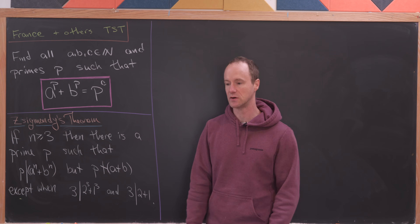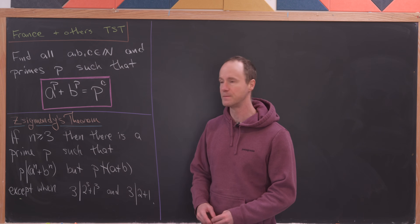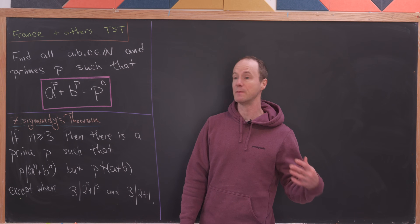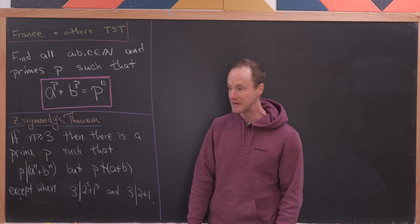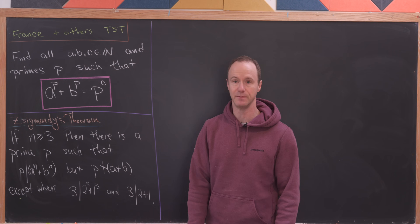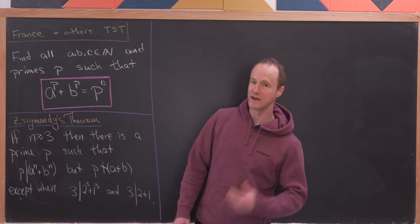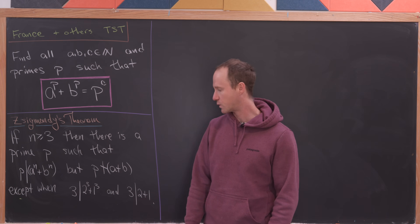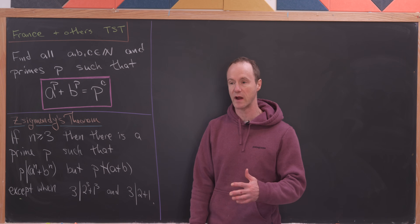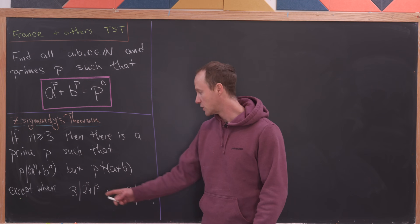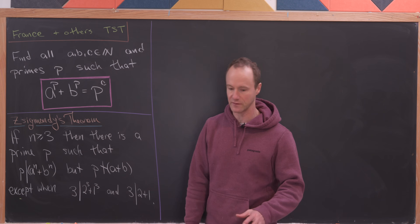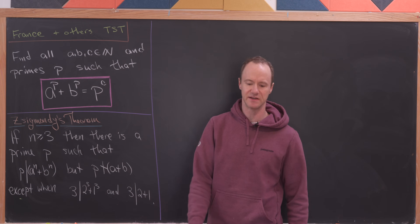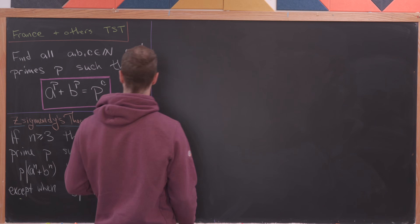The important result we'll use is called Zsygmondy's theorem, which says: if n is greater than or equal to 3, then there exists a prime p that divides a to the n plus b to the n but does not divide a plus b. That fails in exactly one case: 2 cubed plus 1 cubed equals 9, which is 3 squared, and 2 plus 1 equals 3. So 3 is the only prime dividing either of those, whereas in all other cases there's a prime dividing the sum but not a plus b.